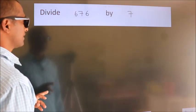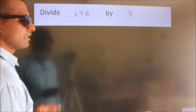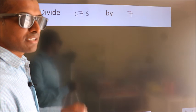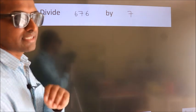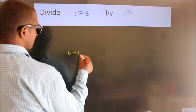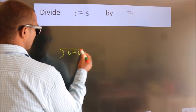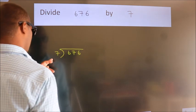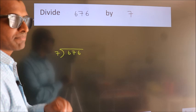Divide 676 by 7. To do this division, we should frame it in this way. 676 here, 7 here. This is your step 1.